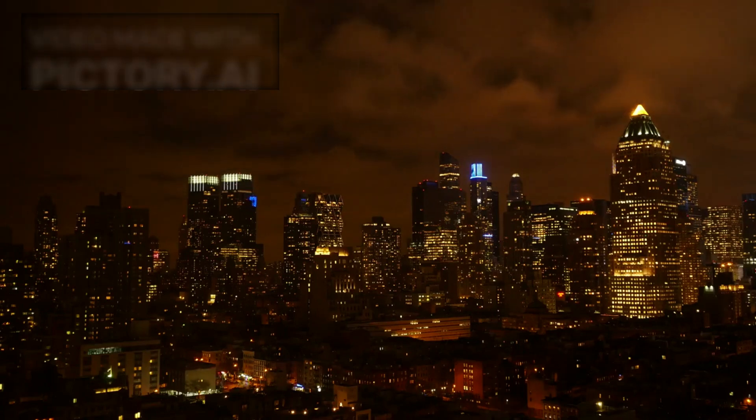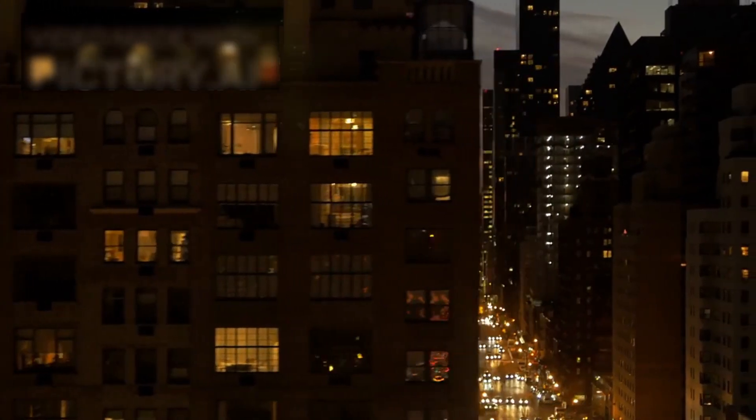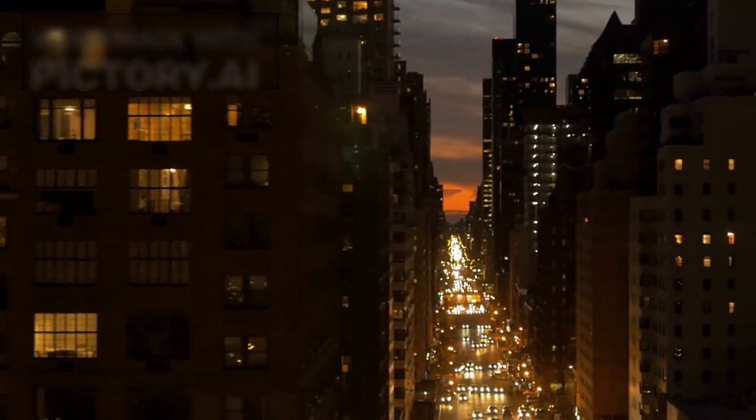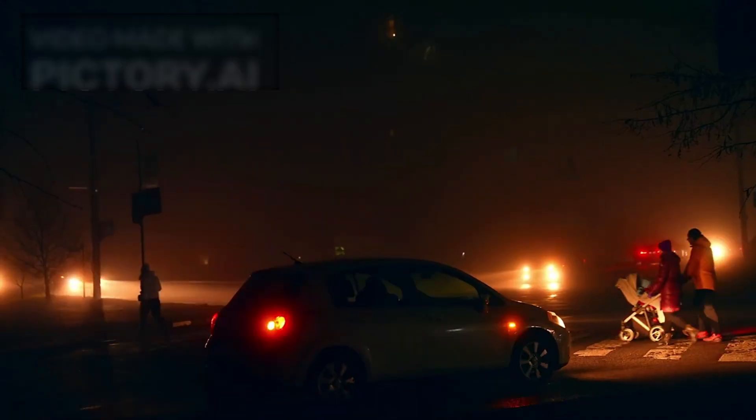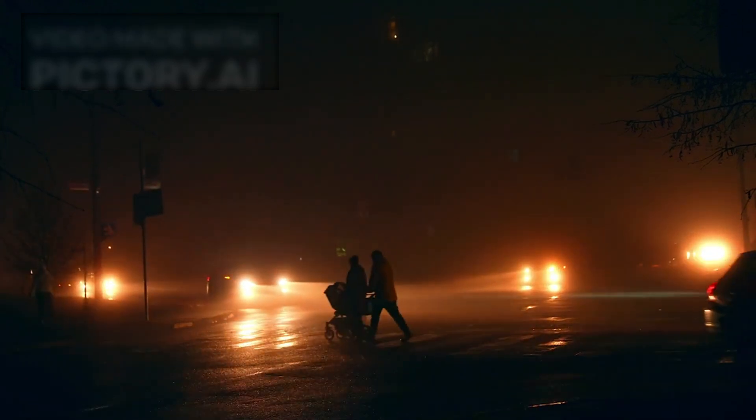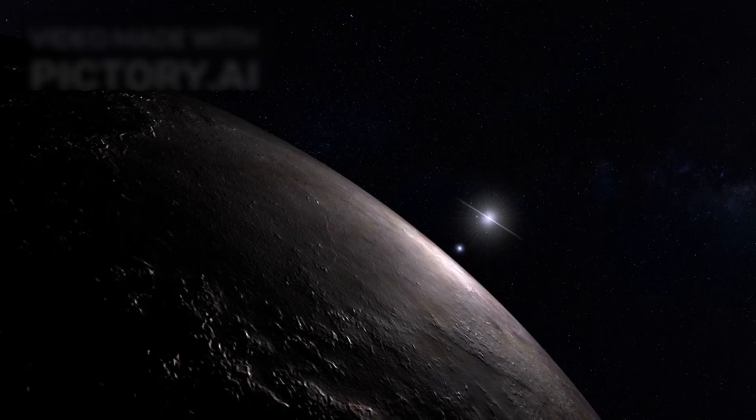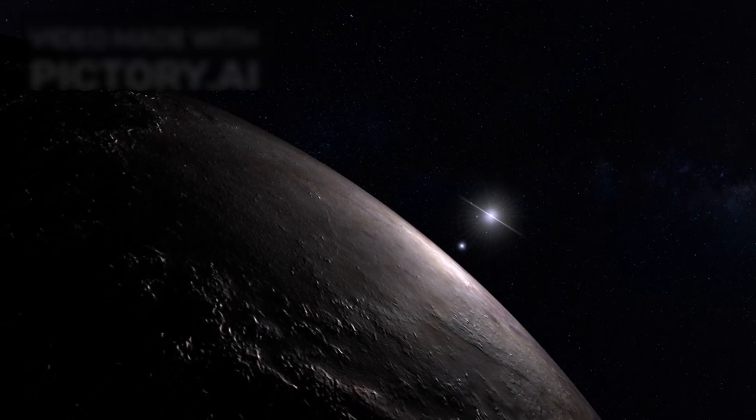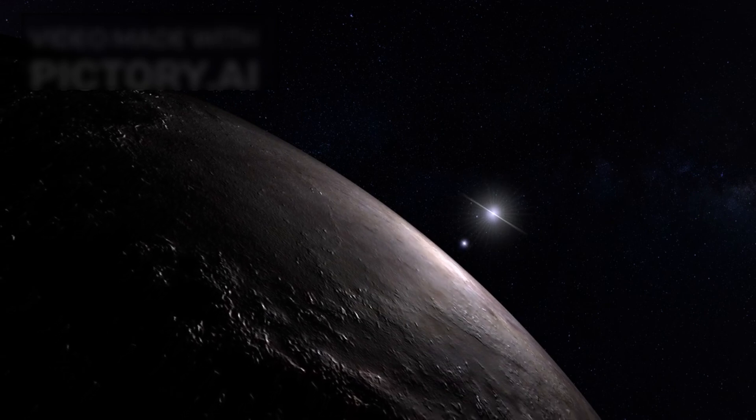On Earth, our cities emit light predictably and continuously. When viewed from orbit, that glow forms intricate webs of civilization. Highways, street lamps, industrial centers, all radiating energy into space. If Proxima b is doing something similar, then someone must be there to build and maintain it.